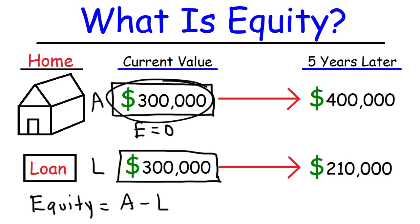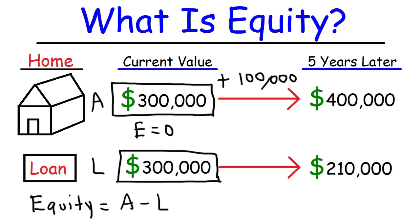But let's say in five years the value of your home appreciates to $400,000. So that means you've gained $100,000 in appreciation, or in value. Now, in the course of those five years, let's say that you pay down the mortgage from $300,000 to $210,000.